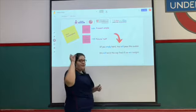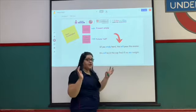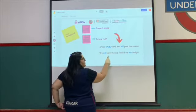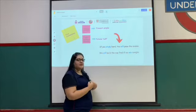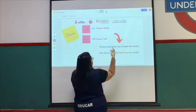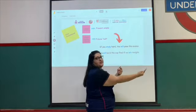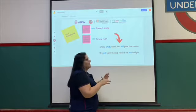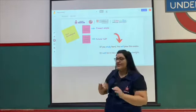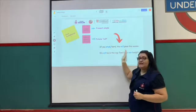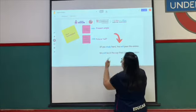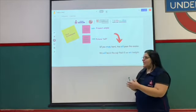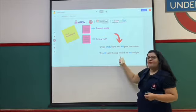But if you pay attention, we have the same structure even when we change the order. For example: 'We will be in the final if we win tonight.' Here I put the result first and then the condition. The order doesn't matter — what I need to focus on is that each sentence has its own structure: in the result I use will, and in the condition I use present simple. 'If we win tonight, we will be in the final' — it's the same.